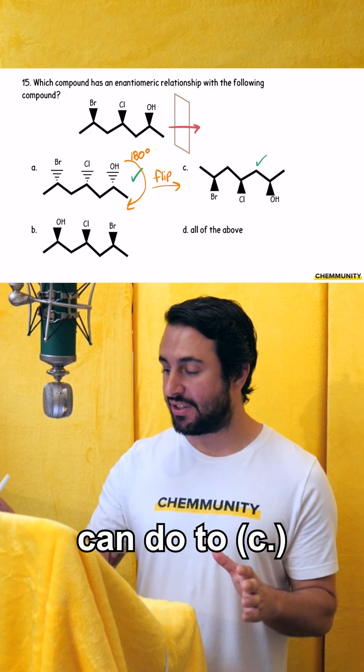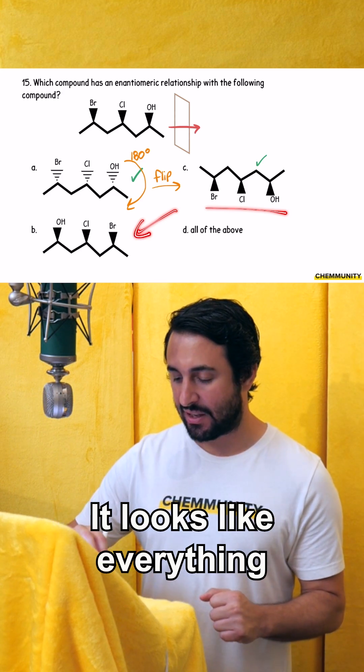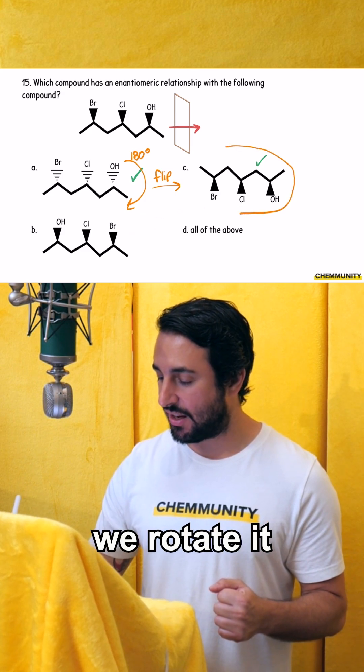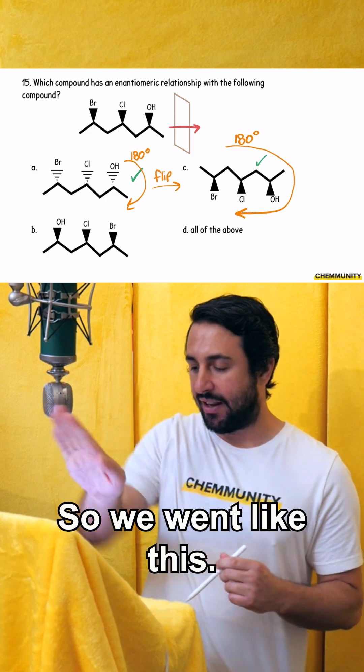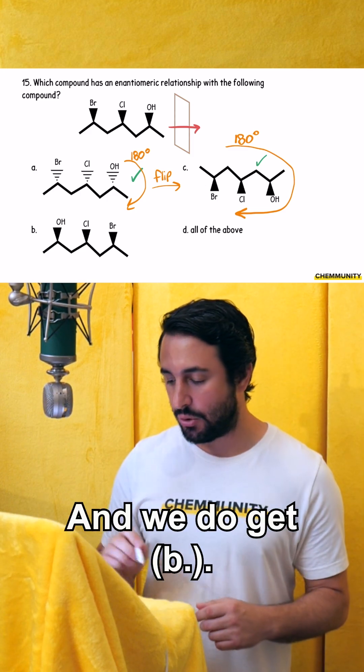Now, is there anything that we can do to C to get structure B? Well, certainly there is. It looks like everything remained in the same plane, but we rotated it. So let's say that we rotate it 180 degrees in the plane of the screen. We just turned it like a piece of paper and we do get B.